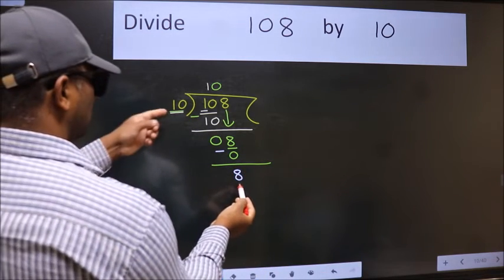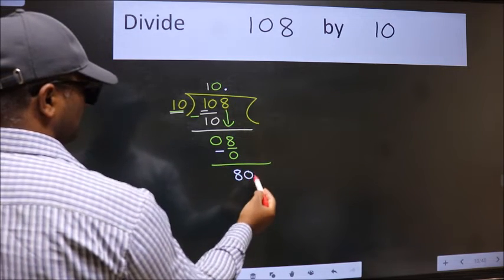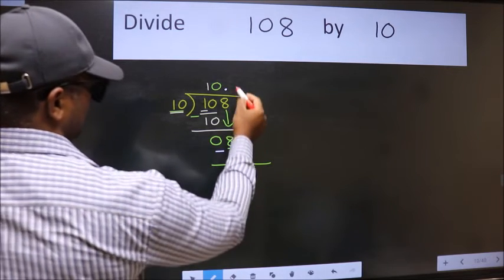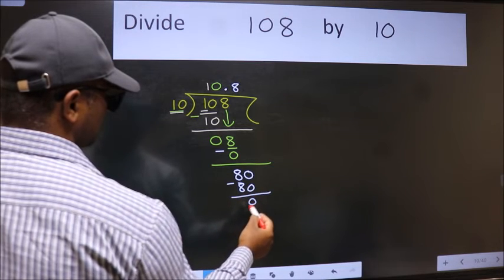And 8 is smaller than 10, so now we can put dot and take 0. So 80. When do we get 80 in the 10 table? 10 times 8 is 80. Now we subtract, we get 0.